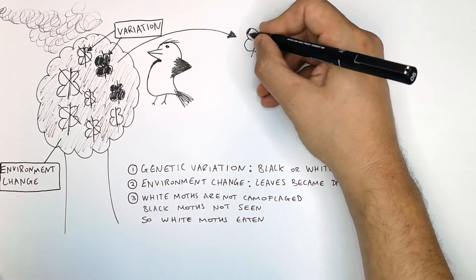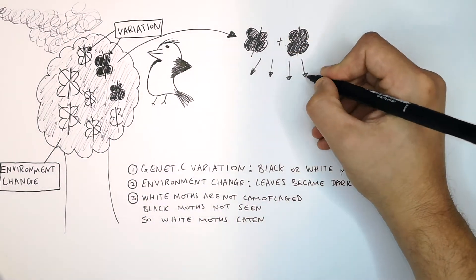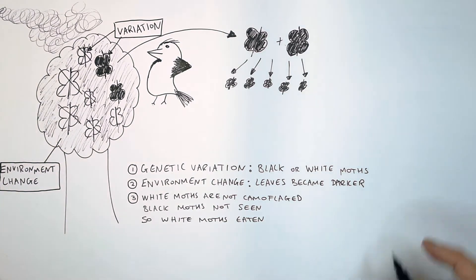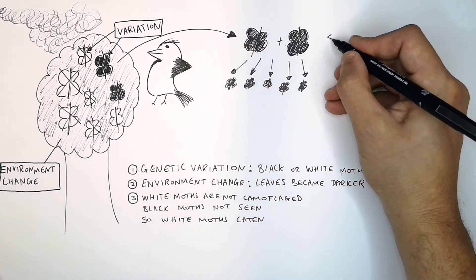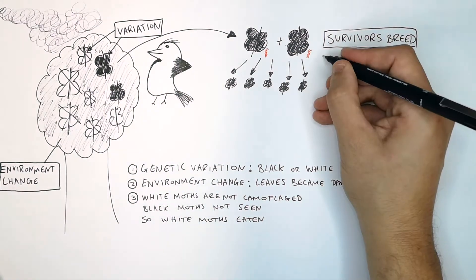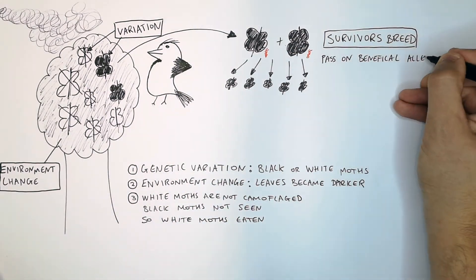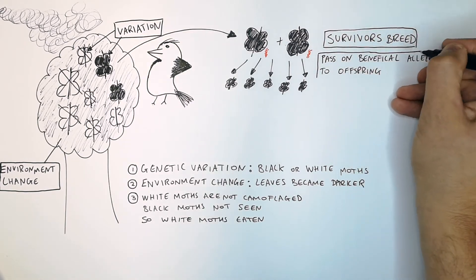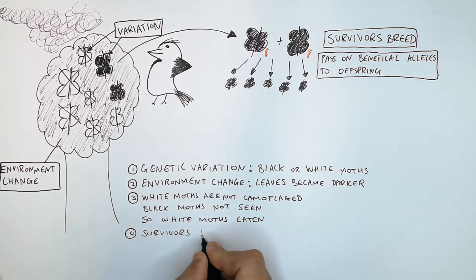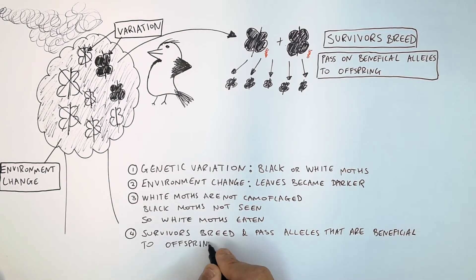Black moths survive and they breed and they pass on their beneficial alleles to their offspring. So those offspring will then survive. The survivors breed and pass on the beneficial alleles to the offspring.